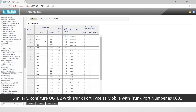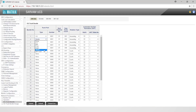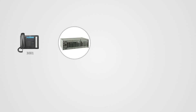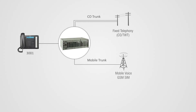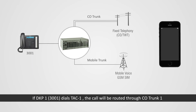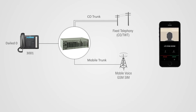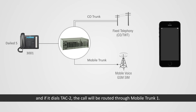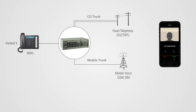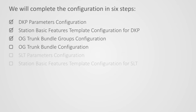Similarly, configure OGTB2 with trunk port type as mobile, with trunk port number as 1 and total trunk count as 1. Submit the page. If DKP1 (extension 3001) dials TAC1, the call will be routed through CO trunk 1; if it dials TAC2, the call will be routed through mobile trunk 1. This completes the outgoing call configuration for DKP port 1.